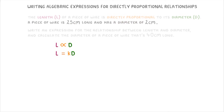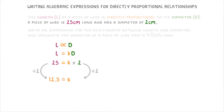And now we can use this second sentence to figure out what K is. So if we plug in our length of 25 and our diameter of 2, we get 25 equals K times 2. And then we can divide both sides by 2 to find that 12.5 equals K. Which means that our equation linking length and diameter is L equals 12.5D.